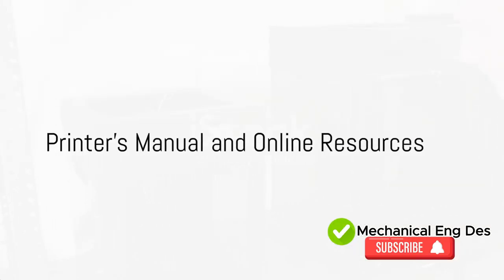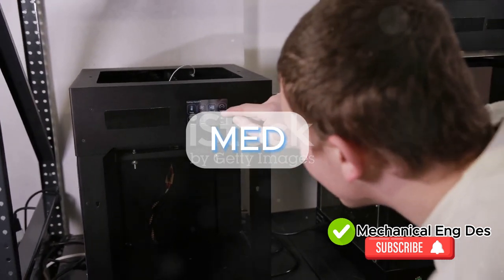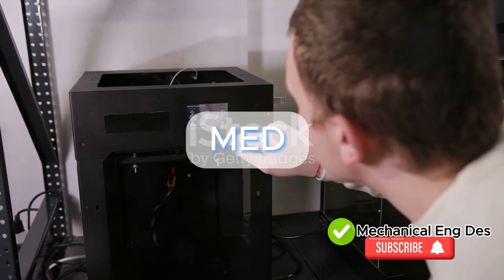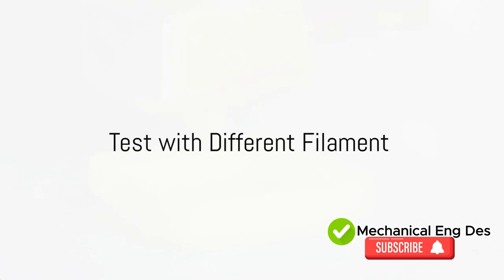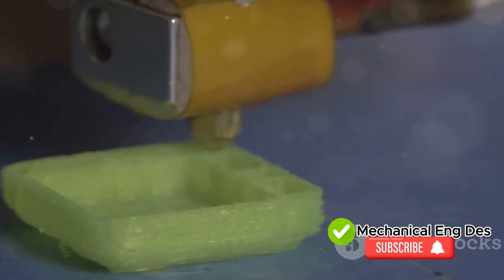Don't forget to refer to the printer's manual or any online resources provided by the manufacturer. These can be gold mines of information and solutions to common issues. Next, test with a different filament. This will help you rule out any potential issues with the material you're currently using.